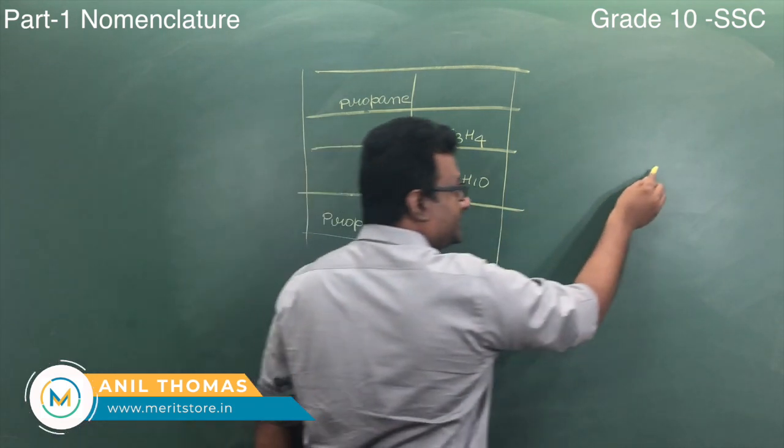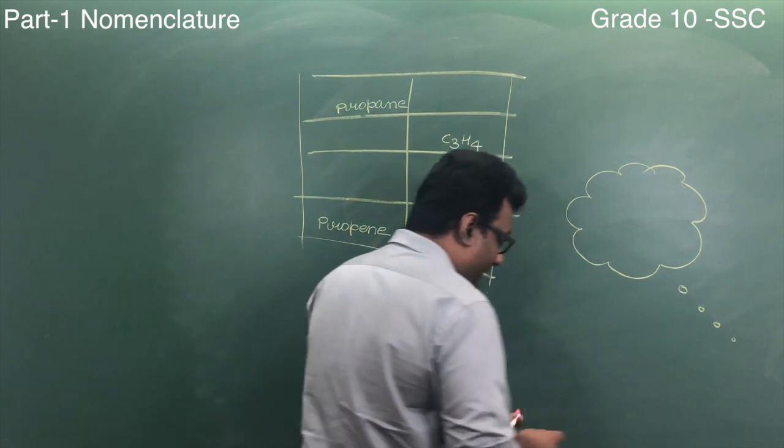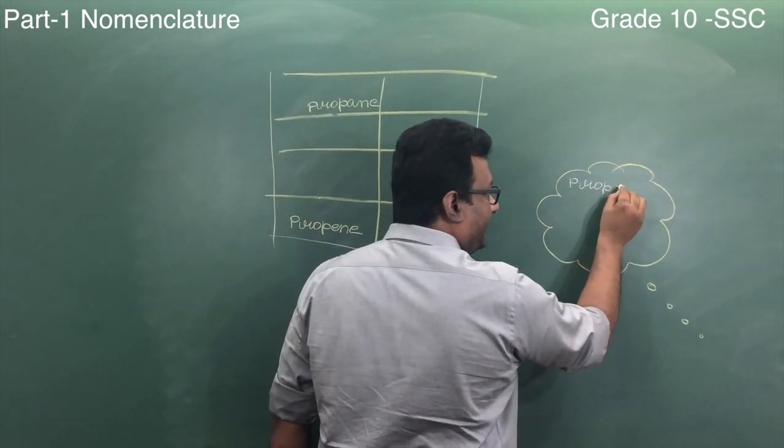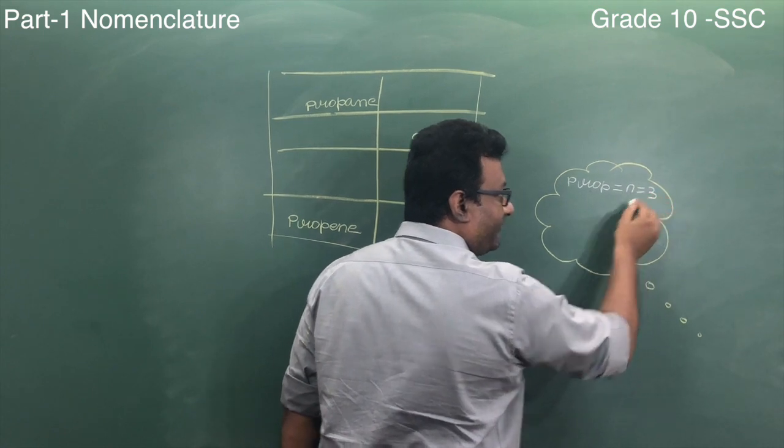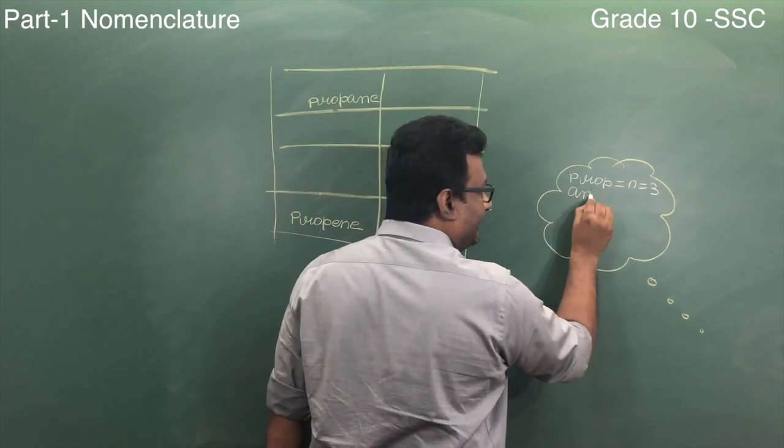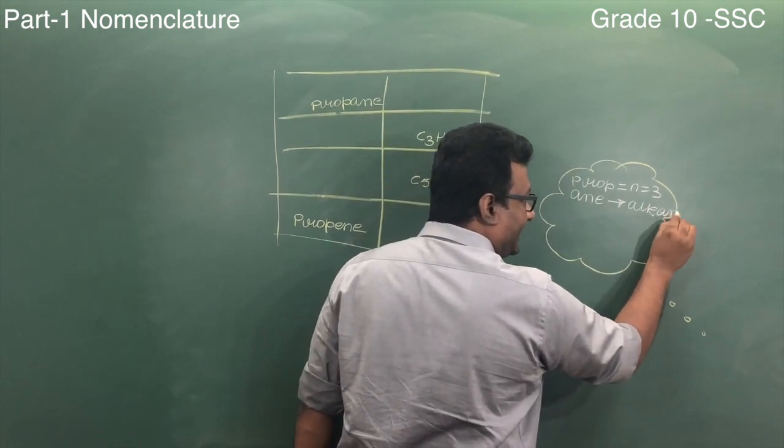So what does prop mean? You will think, the moment propane comes to you, what will you think? You will think that prop means n equals 3 for carbon. That's what prop tells you. And the ending is ane. Ane tells you that it is alkane, and the formula for alkane is CnH2n+2.